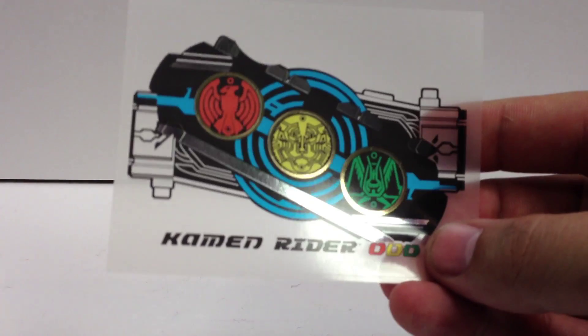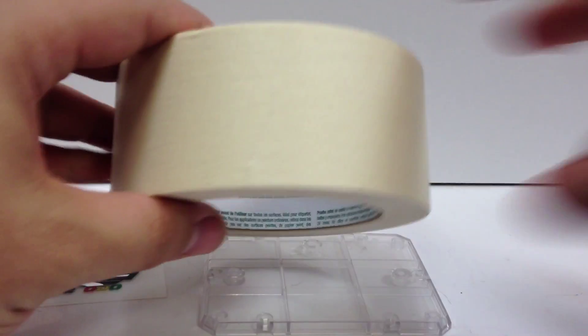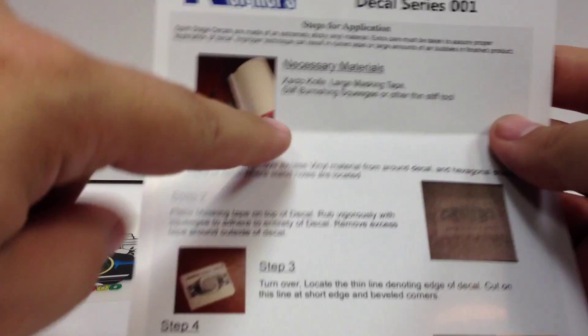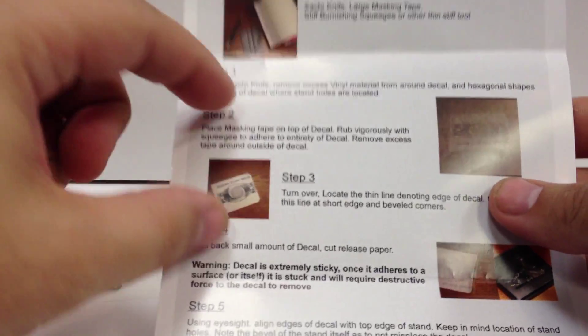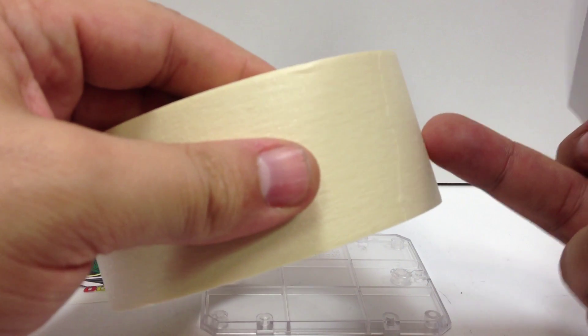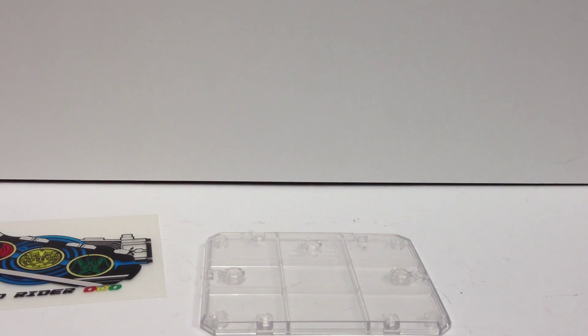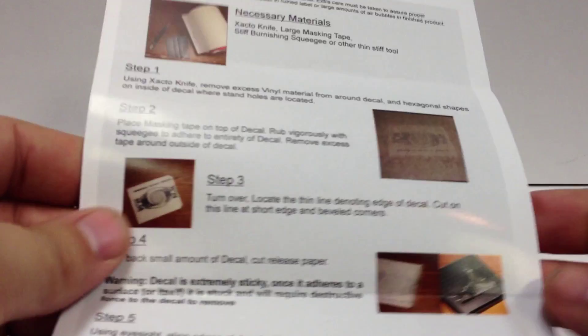In order to apply this, it's a lot like if you ever put a protective screen protector on your iPhone or anything like that. It's a very similar process. You're going to want your stand, the label, an exacto knife, some masking tape. The instructions say to use this wide masking tape that's wide enough to cover the whole label at once. I found just as much success using two strips of this to cover it. Something to squeegee with - I'm just using my expired zoo pass here. And then obviously the instruction sheet and some sort of cutting surface.